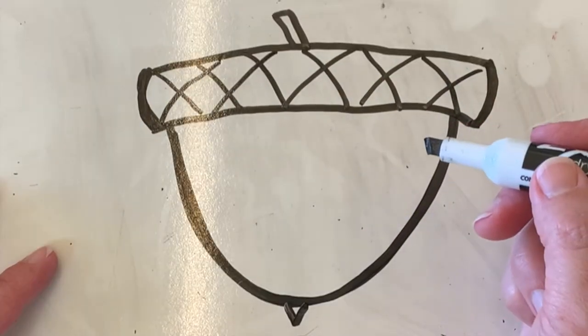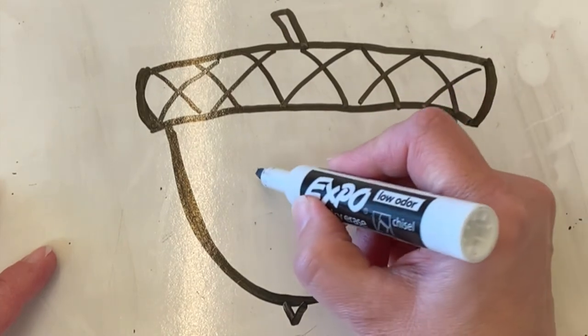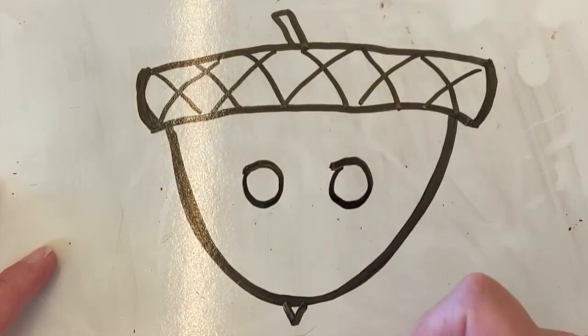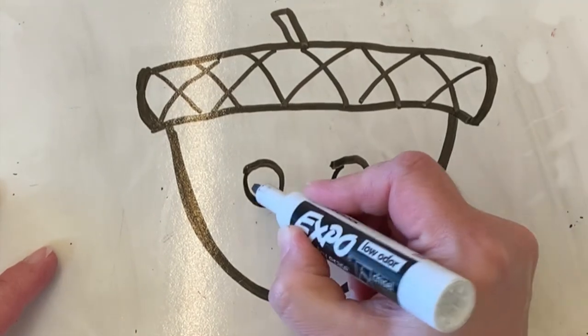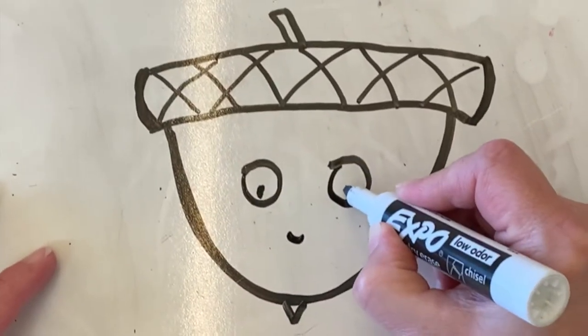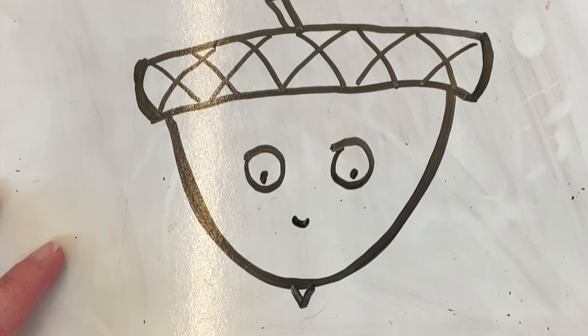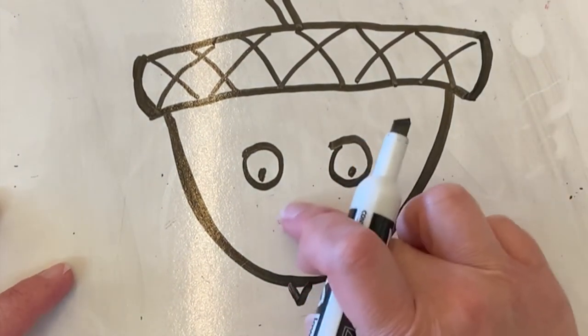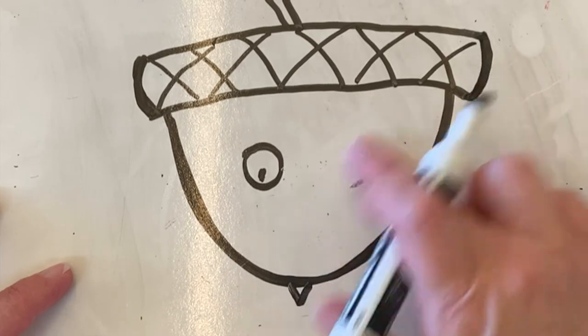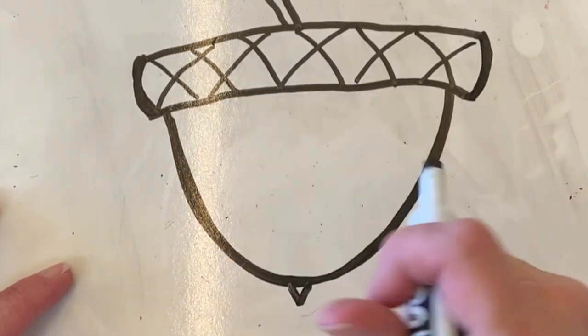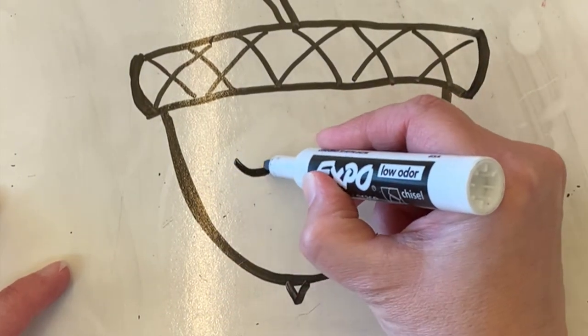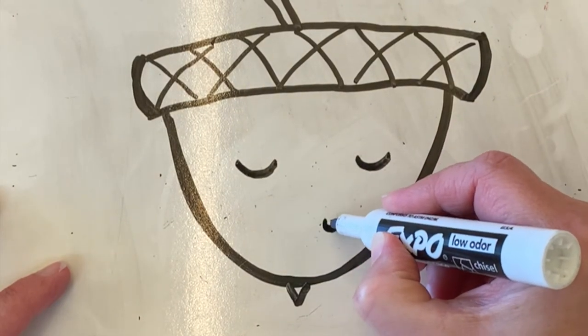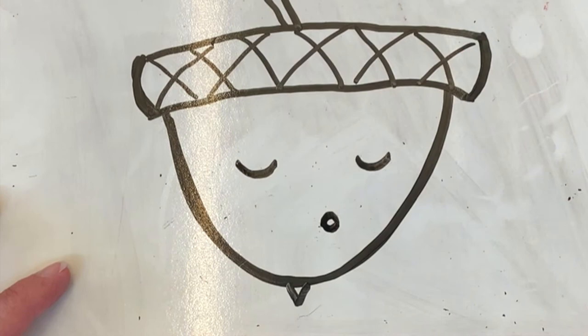Now the fun thing about this acorn is that you can decide what kind of face your acorn has. He needs probably eyeballs or eyes and a mouth, so you can do a circle with dots inside. But what are some other faces you could do? You could also make it look like your funny little acorn person is sleeping. Maybe he's snoring or singing.